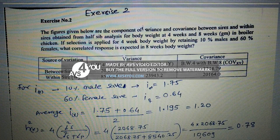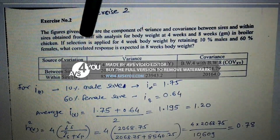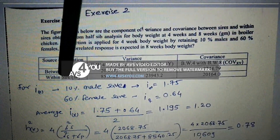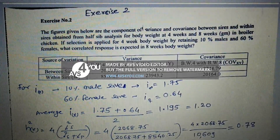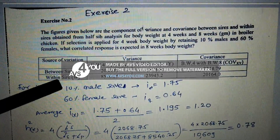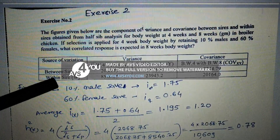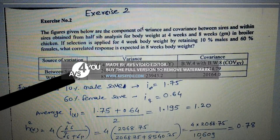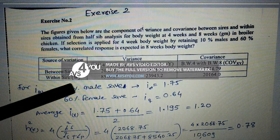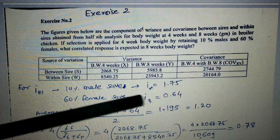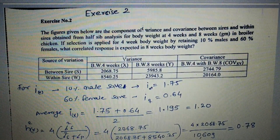The variance-covariance values between-sire and within-sire are available. In an earlier example it was total phenotypic, but here, if we sum between-sire and within-sire, we will get the total phenotypic variance. So this variance-covariance data is what we will work with.